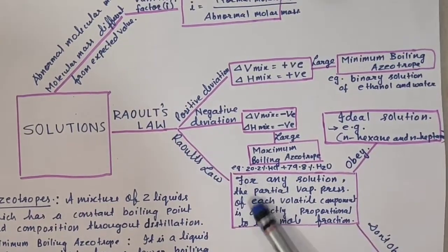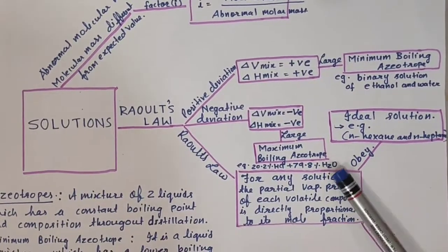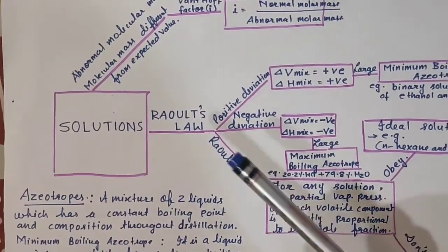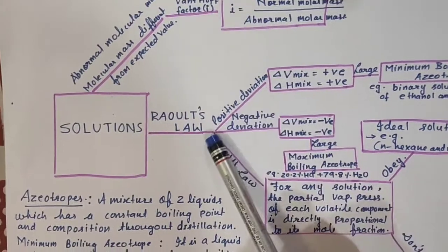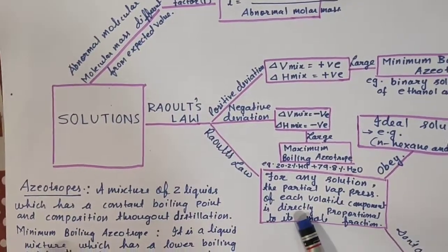When negative deviation occurs, delta V is negative, delta H is also negative, and maximum boiling azeotrope. Example: 20.2% HCl and 79.8% H2O. And this is Raoult's law definition. So this is the flowchart of Raoult's law, positive deviation, negative deviation.